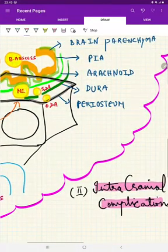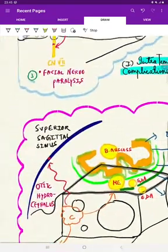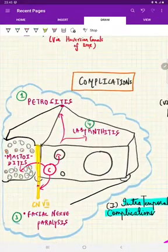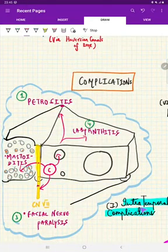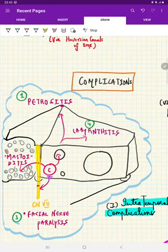First we'll complete intratemporal complications. The pathology is now in the tympanic cavity. Here it can extend posteriorly through the aditus ad antrum into the mastoid, causing mastoiditis. It can directly affect the posterior wall and affect the facial nerve, causing facial nerve palsy or paralysis.